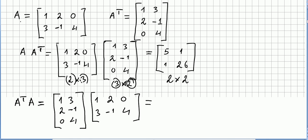So we took A, we took A transpose, and we took the product of A times A transpose. 2 times 3 times a 3 times 2, so we got a 2 times 2. So our question is, is A times A transpose always equal to A transpose times A? That's a good question.